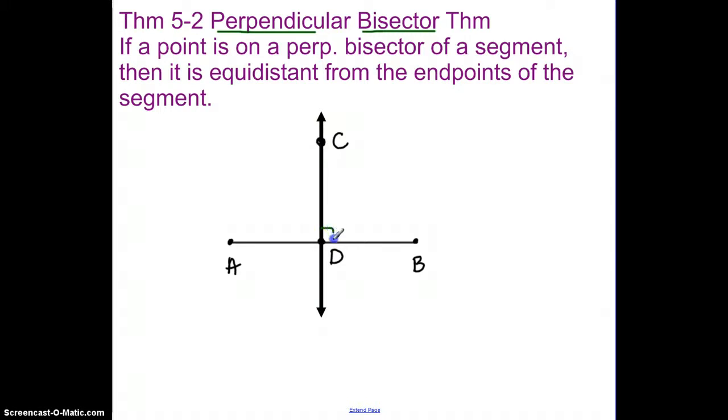So first of all, I'm going to add that piece here. Now, if this is a perpendicular bisector, not only does that 90-degree angle happen, but this piece AD and DB are also going to be equal. So that's the first part of the if part of our if-then statements. And then it says that any point on this perpendicular bisector is equidistant from the endpoints of the segment. So the endpoints of our segment are A and B.